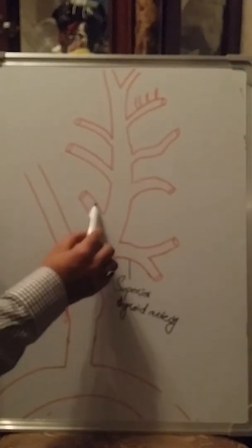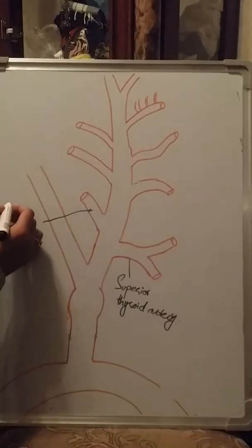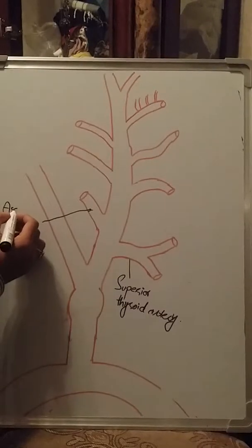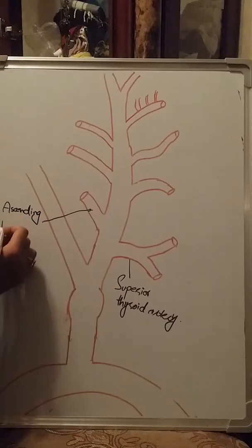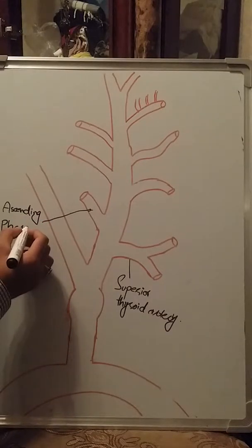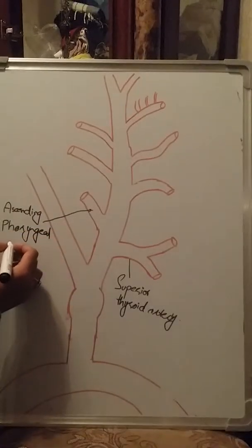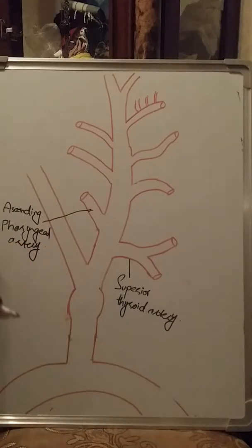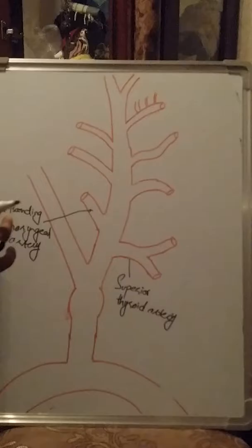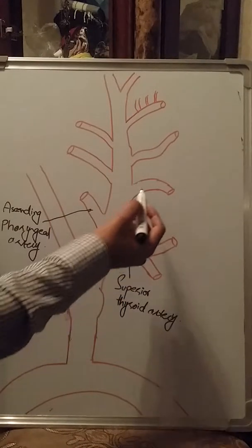The second branch is the ascending pharyngeal artery. This artery provides blood supply to the pharyngeal region of our neck.